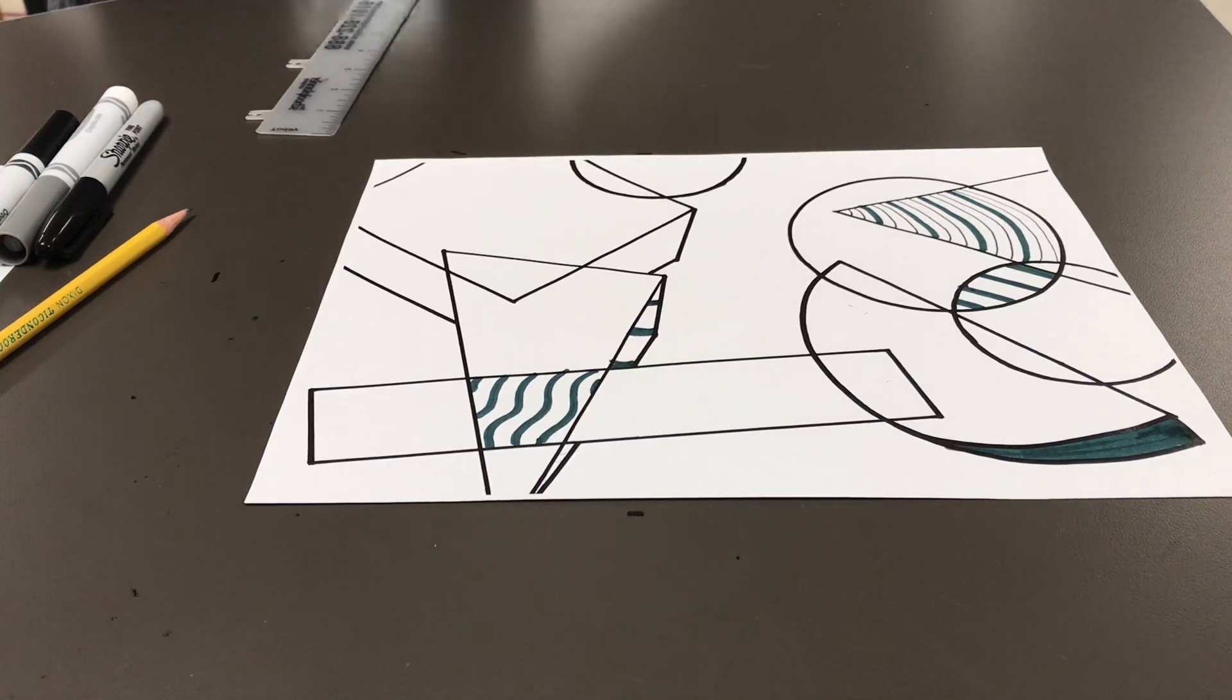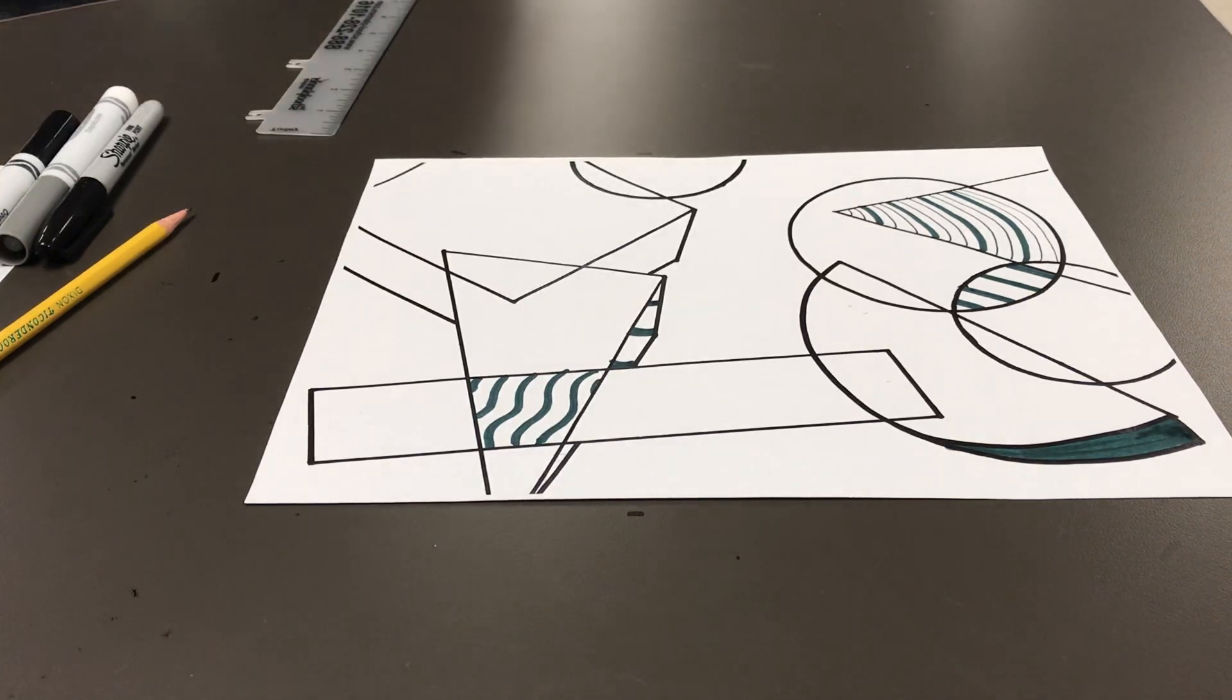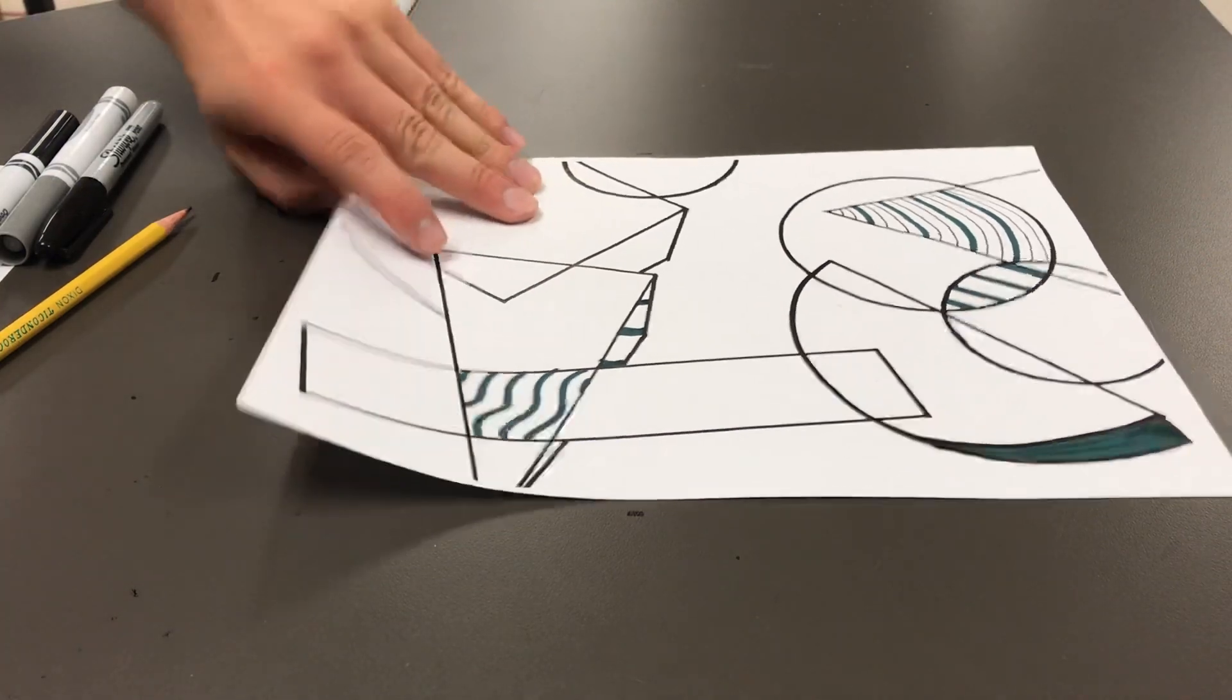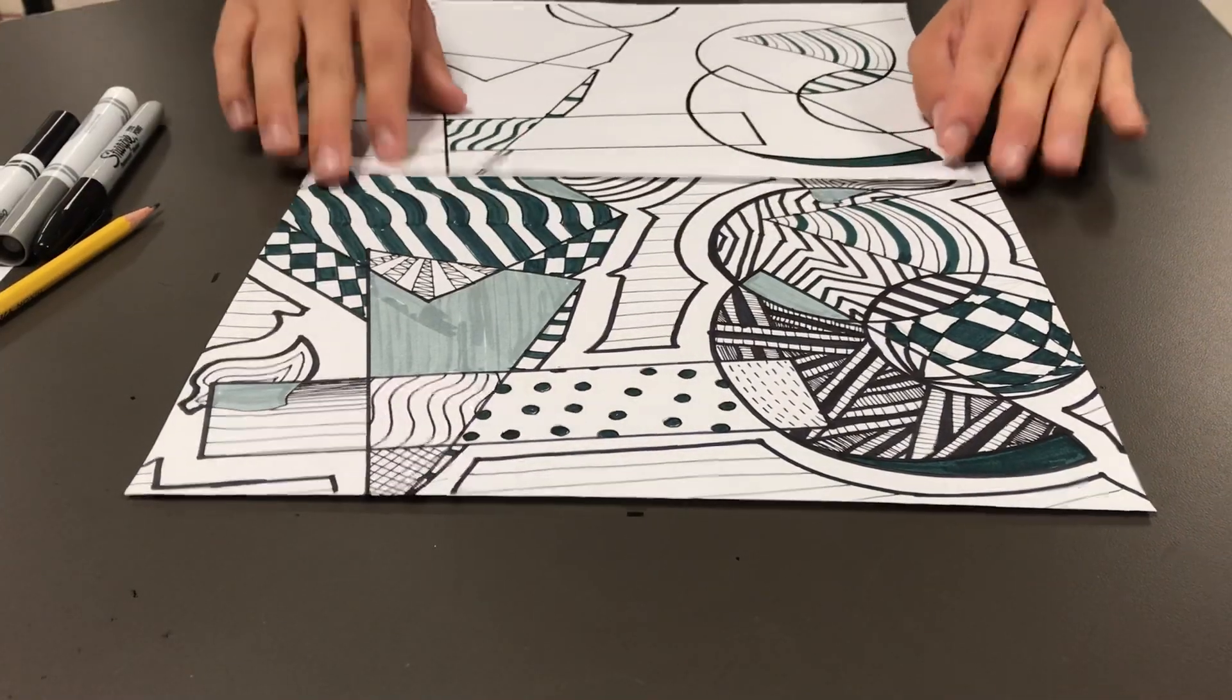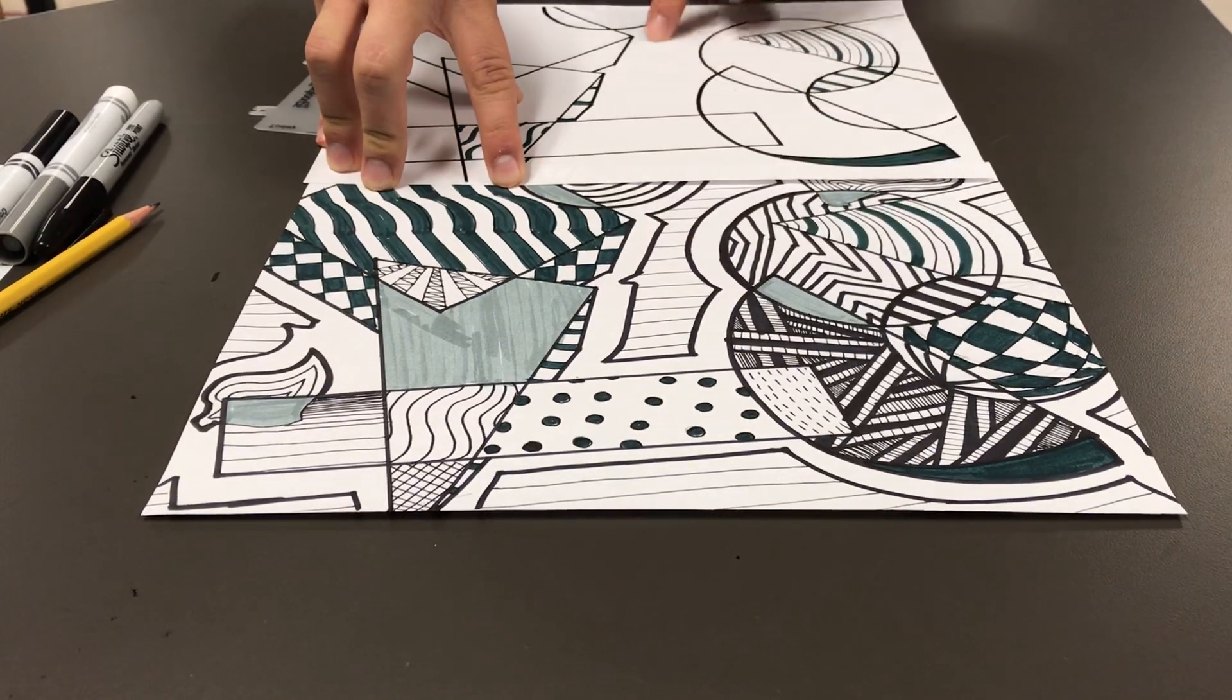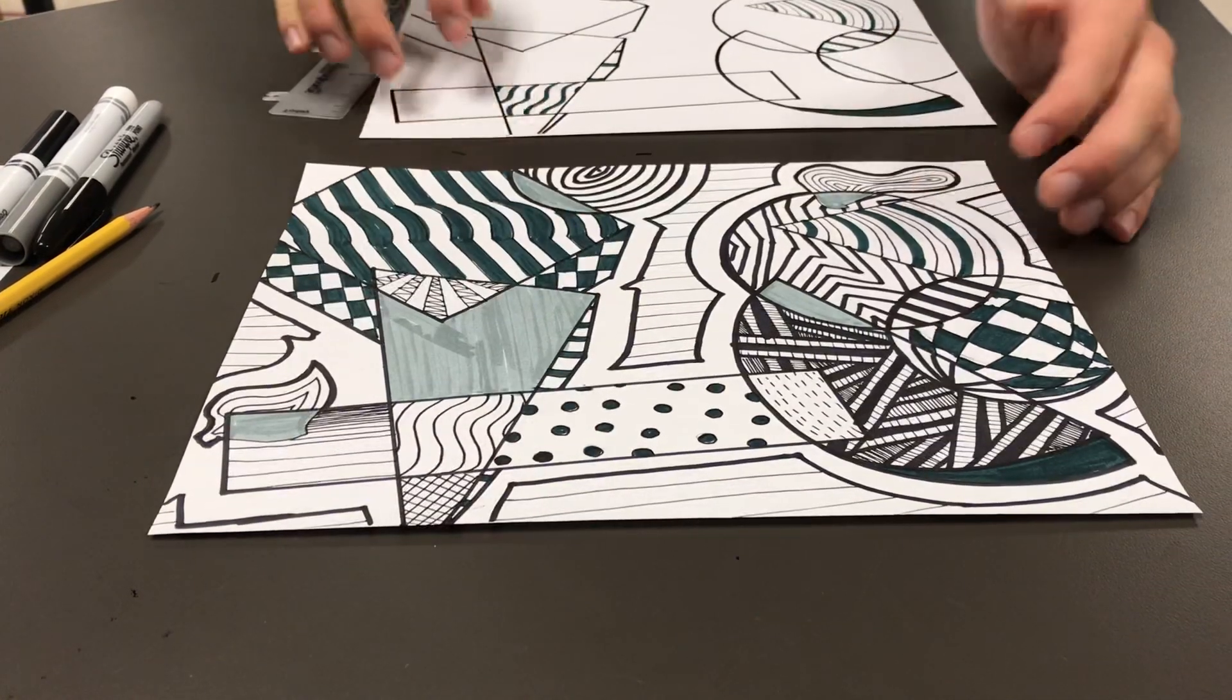Just keep going. Keep adding different patterns into different shapes. Eventually your page will start to get a little bit crowded and that's a good thing. You want lots of information because you're going to end up with something that looks kind of like this. It's all the same shapes. It's the same composition except I did add some stuff to fill in these big negative spaces at the very end. But I used a different pattern inside of each and every piece.